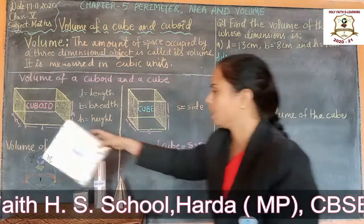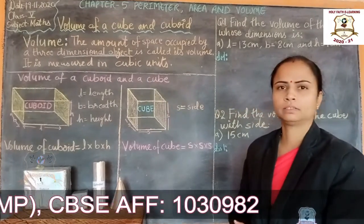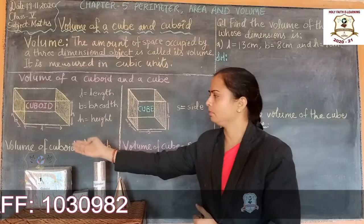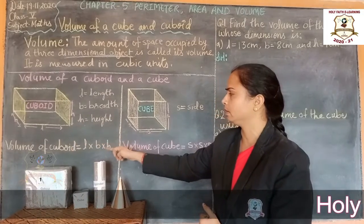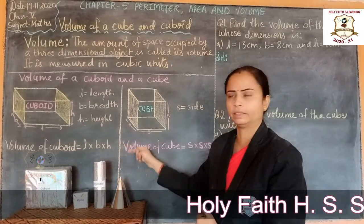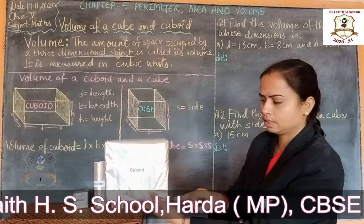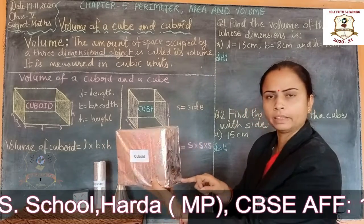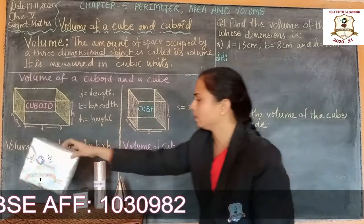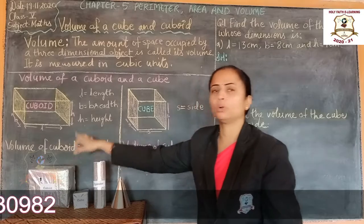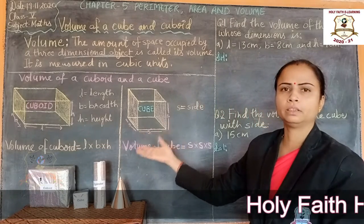Now, how to find out the volume of a cuboid? Formula: Volume of cuboid equals length into breadth into height. This is length, this is breadth, and this is height. So the formula to find out the volume of a cuboid is: Volume = length × breadth × height.